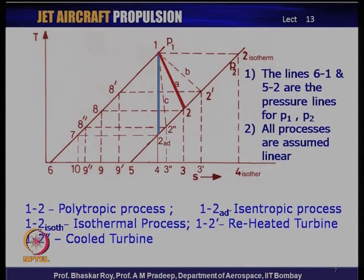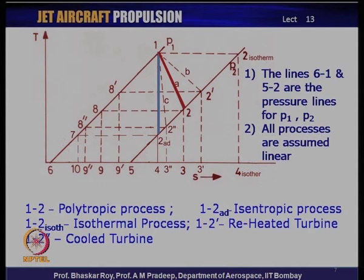Looking at a typical T-S diagram of a turbine operating from station 1 to station 2, between pressure lines P1 and P2, we assume for simplicity that all processes follow linear paths. In reality, many polytropic processes follow slightly curvilinear paths, and the pressure lines on a T-S diagram are not truly linear — they are slightly curvilinear and diverging. For our simple analysis we assume all are linear.